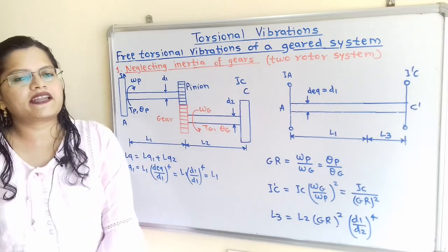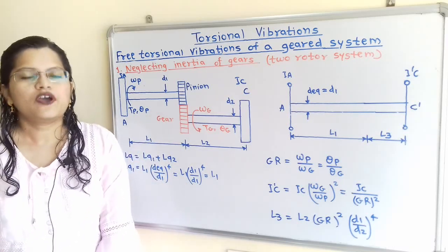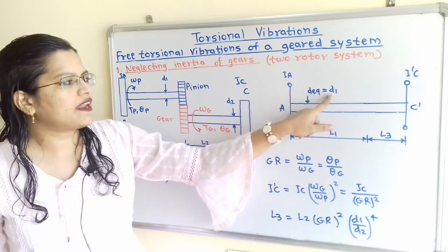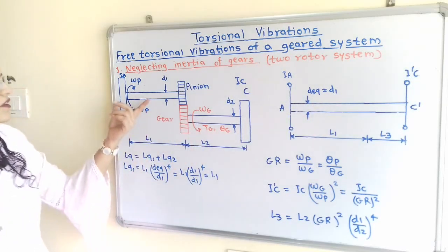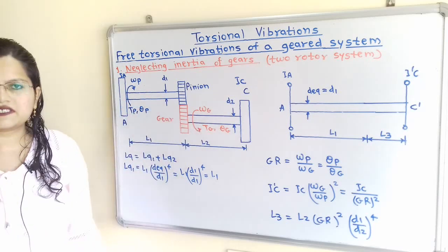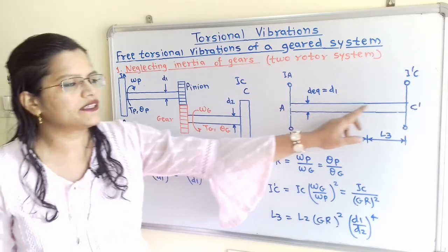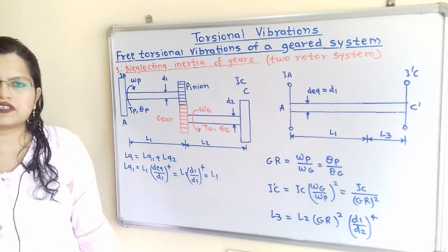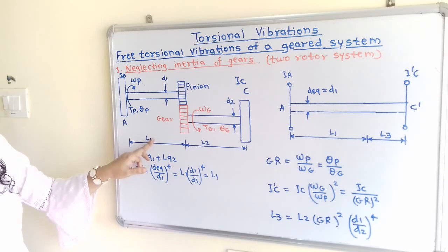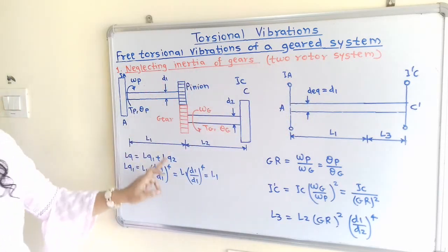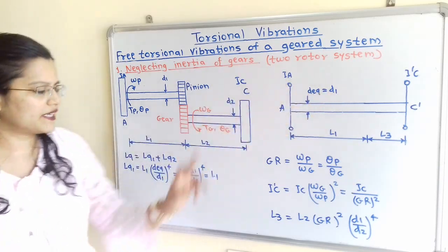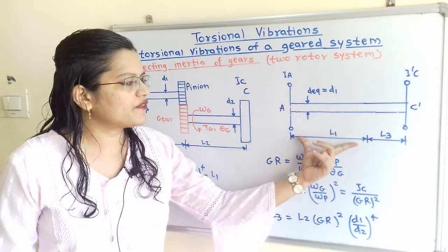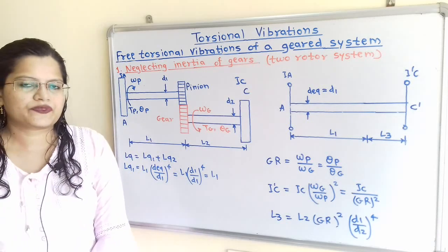This is the actual system. Now we have to draw the equivalent system assuming a uniform diameter D equivalent equal to D1. The equivalent length is LQ1 plus LQ2. LQ1 is related to the first part: LQ1 equals L1 multiplied by (D equivalent / D1) raised to 4. Since D equivalent equals D1, this simplifies to L1. So for the equivalent system, the first part has equivalent length L1.